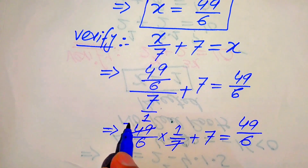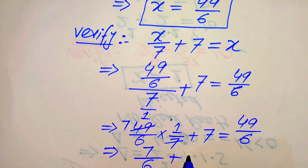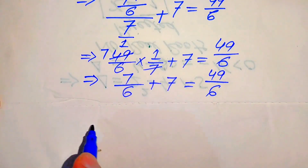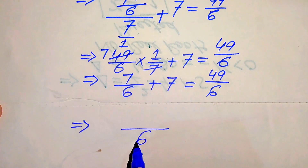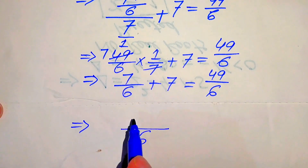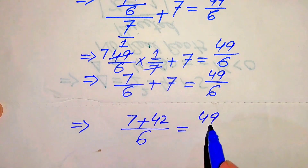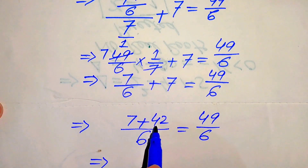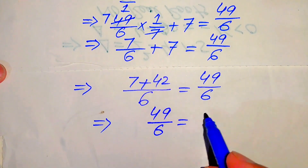7 times 7 gives 49, so we get 7 over 6 plus 7 equals 49 over 6. Taking the LCM of the left-hand side, the LCM is 6. So we get 7 plus 6 times 7, which is 42, over 6, equals 49 over 6. That gives 49 over 6 equals 49 over 6.